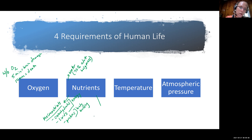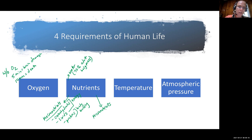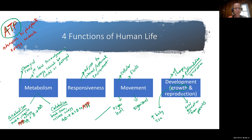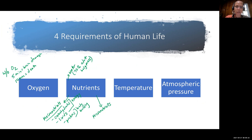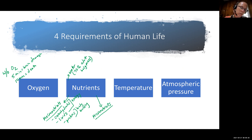We also have what we call micronutrients. Remember the prefixes: micro means small, macro means large. So macronutrients — the carbohydrates, lipids, and proteins — we need on a large scale, while micronutrients we need on a small scale. We think about these in our diet as being vitamins and minerals.